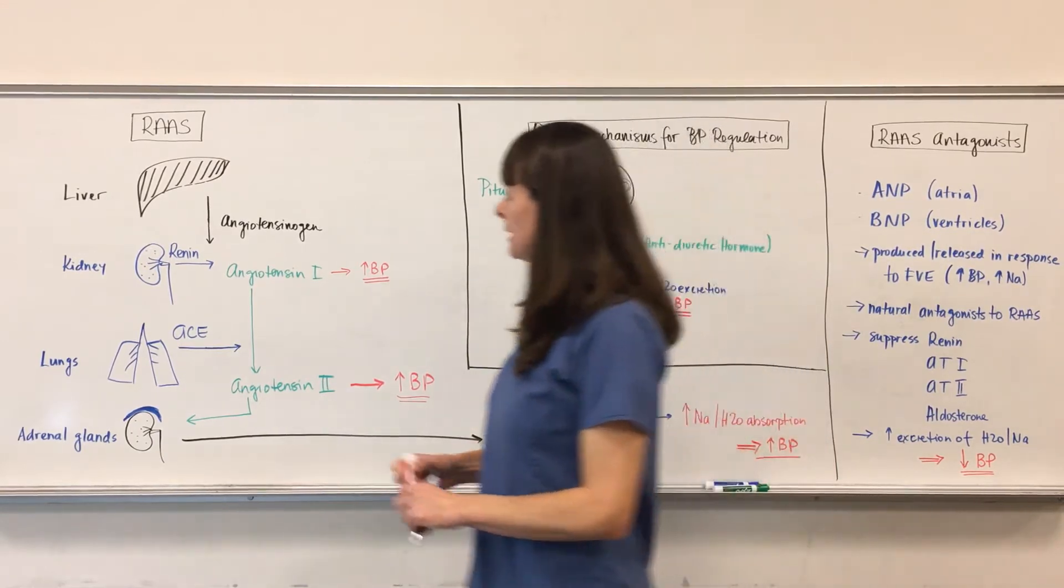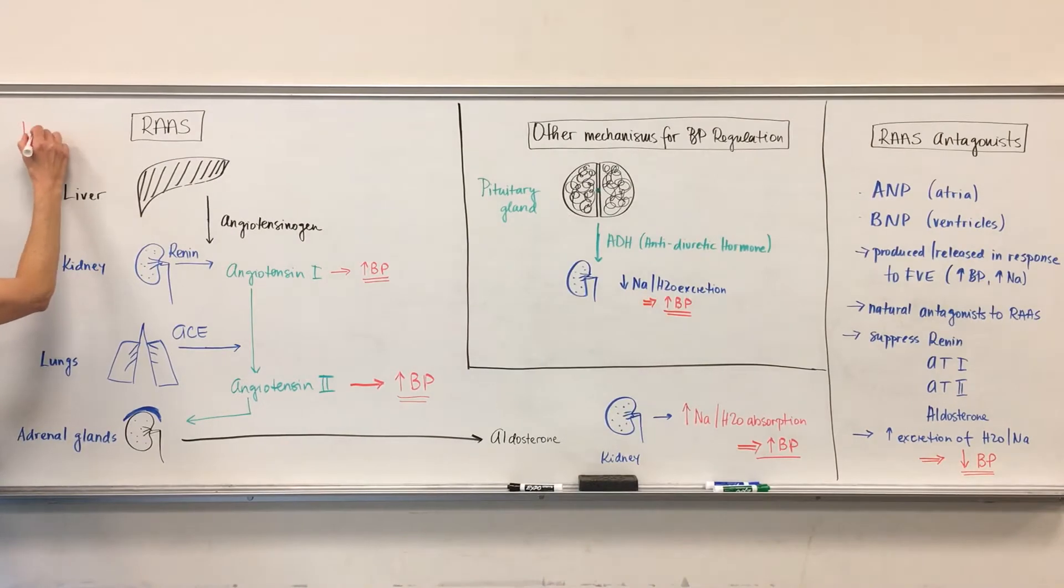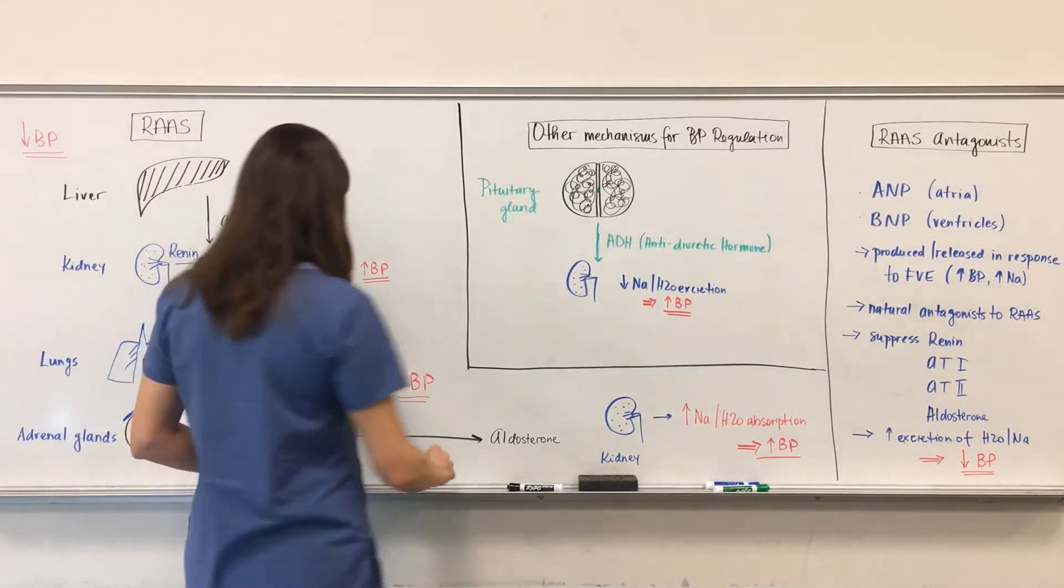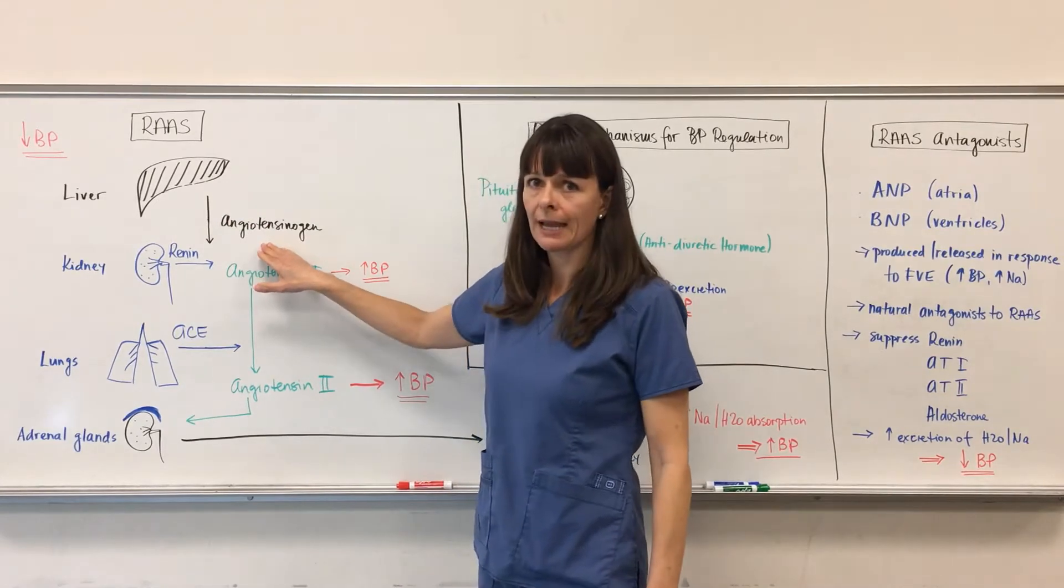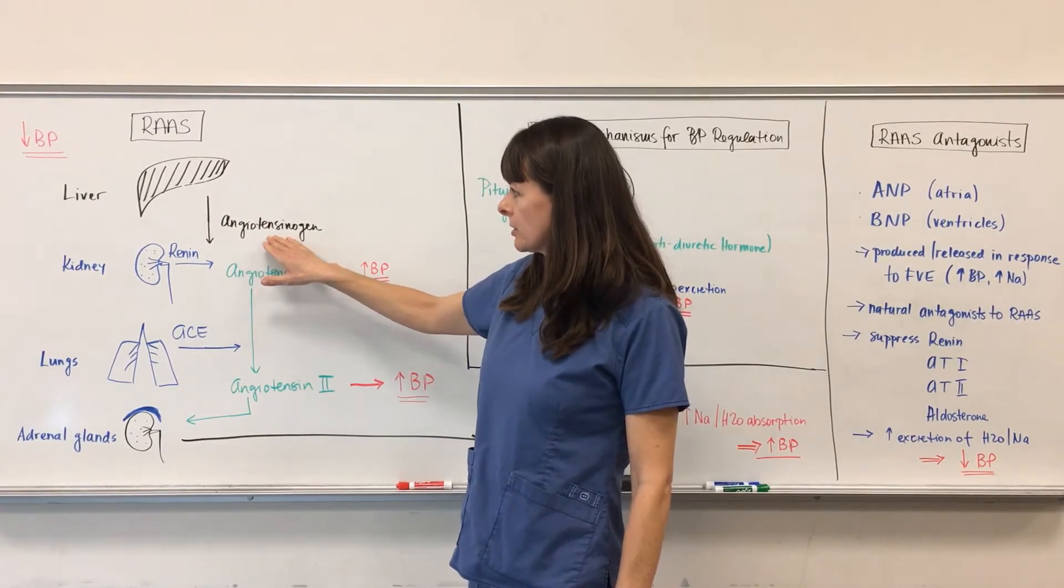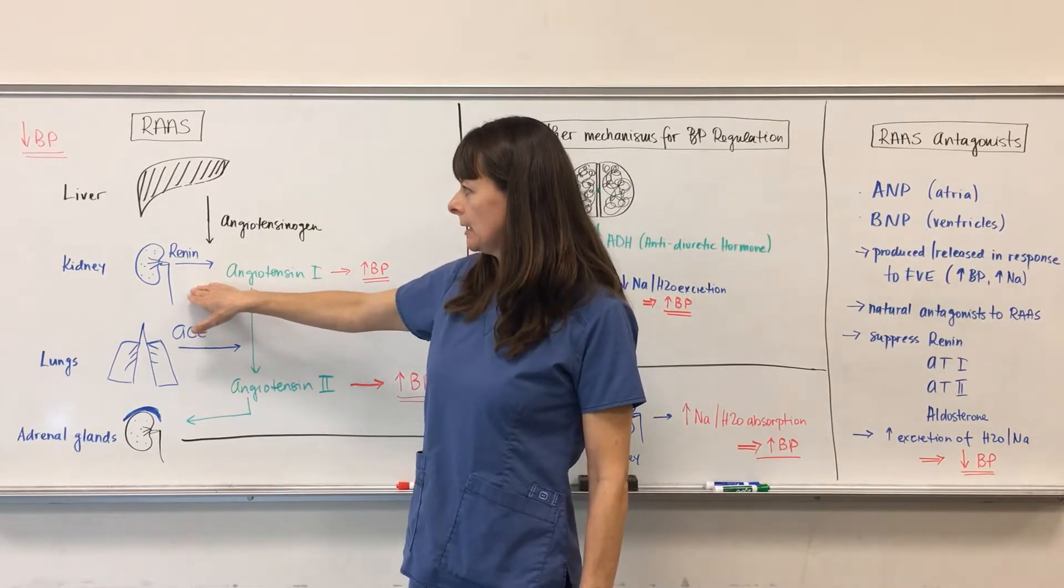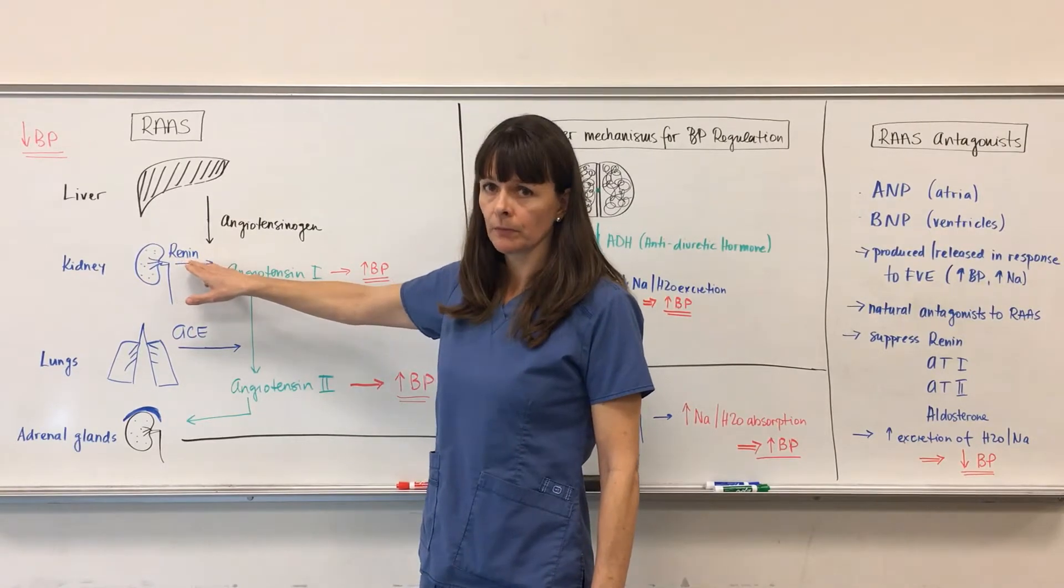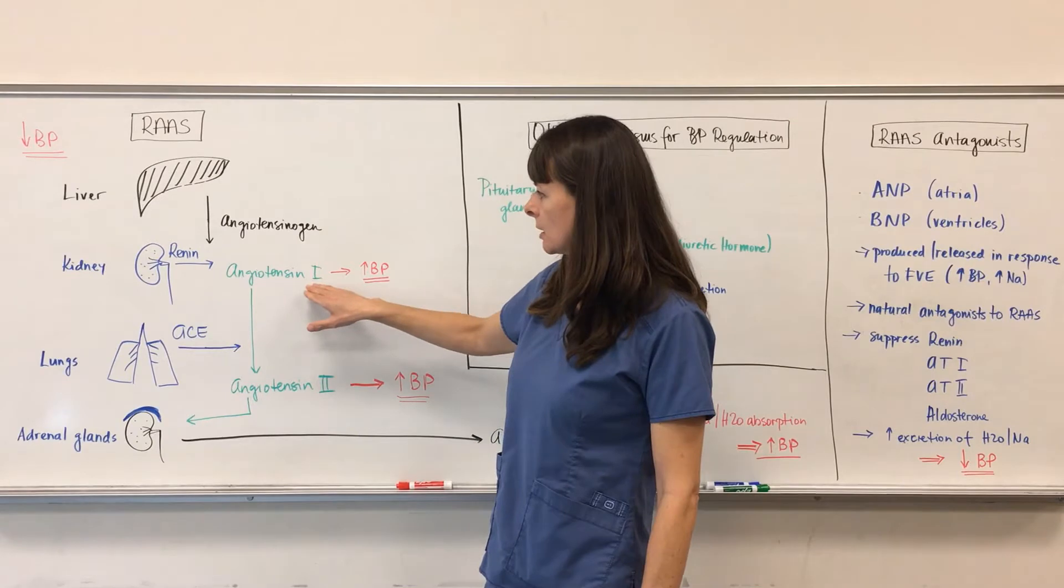Basically what that means is if the blood pressure for some reason drops, this is all in response to low blood pressure. The liver will excrete a hormone called angiotensinogen. Angiotensinogen then also works on the kidney and the kidney will release renin. Both of them will combine to form angiotensin 1.